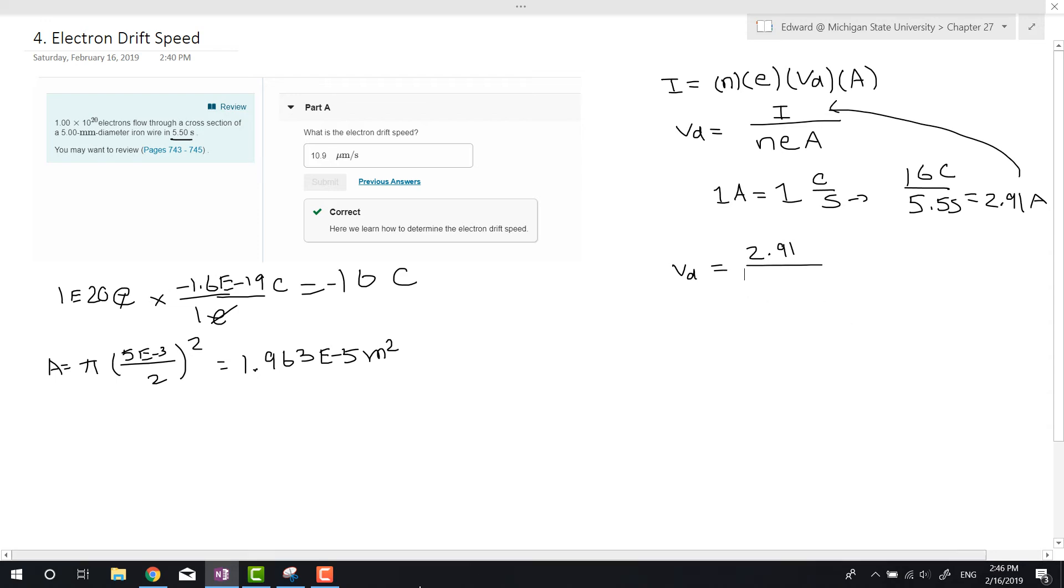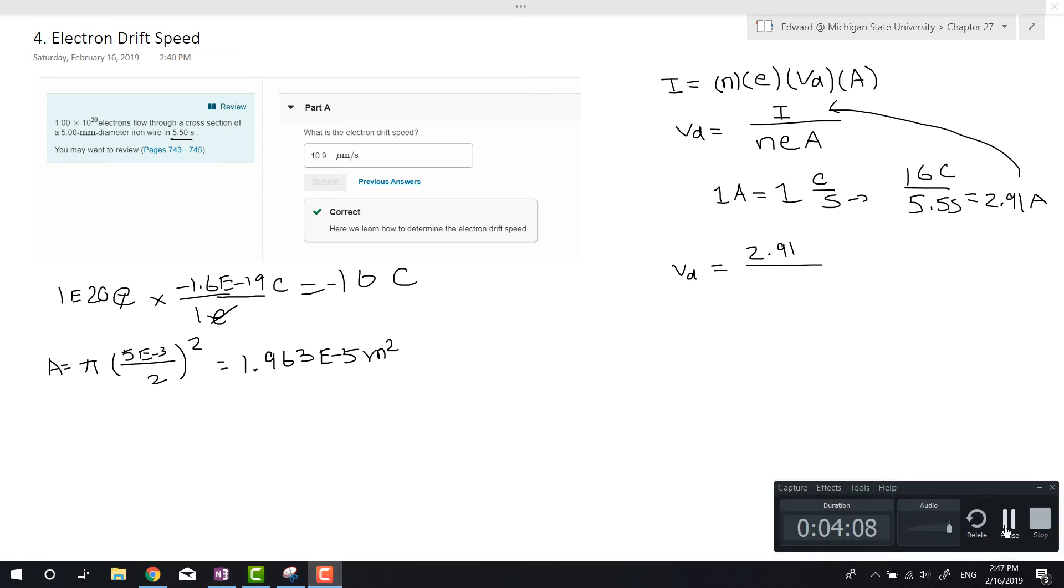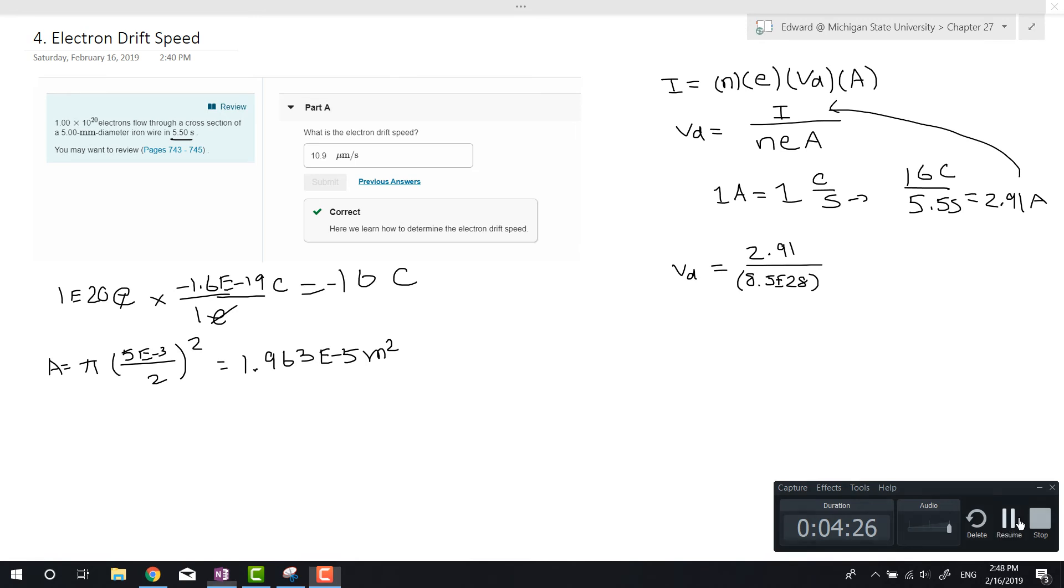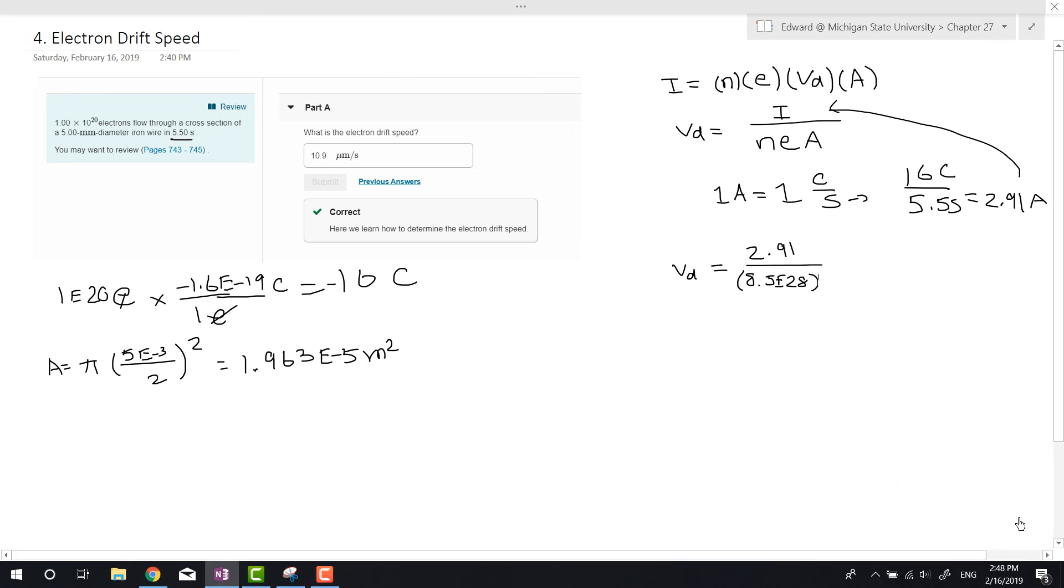Let's go ahead and find this in the book. Okay, so in the book the electron density for iron is 8.5 e to the 28. Alright, sorry about that, I had to get my book myself.